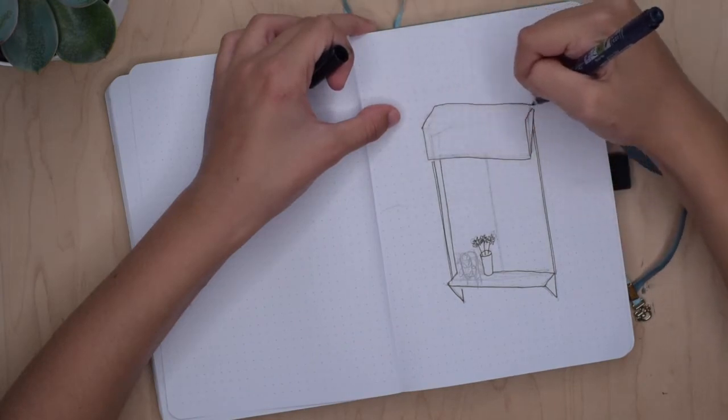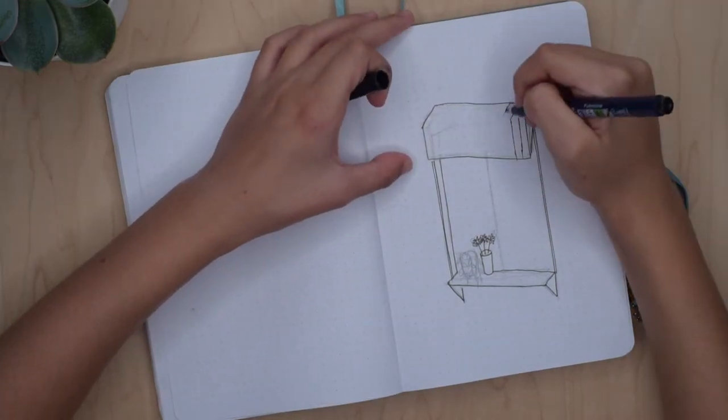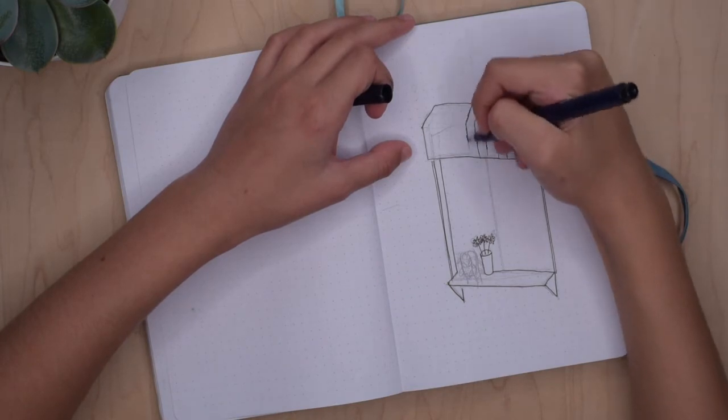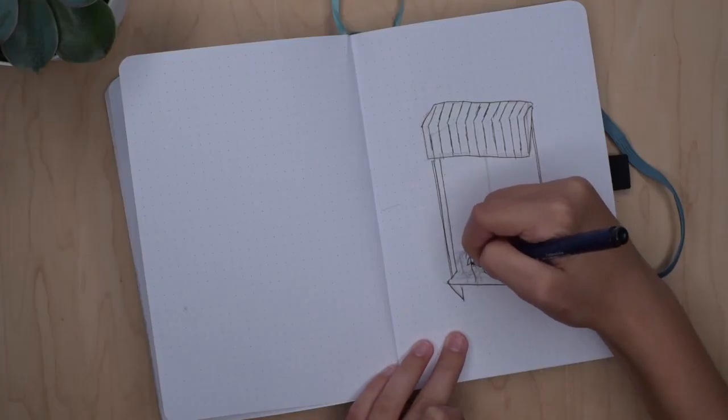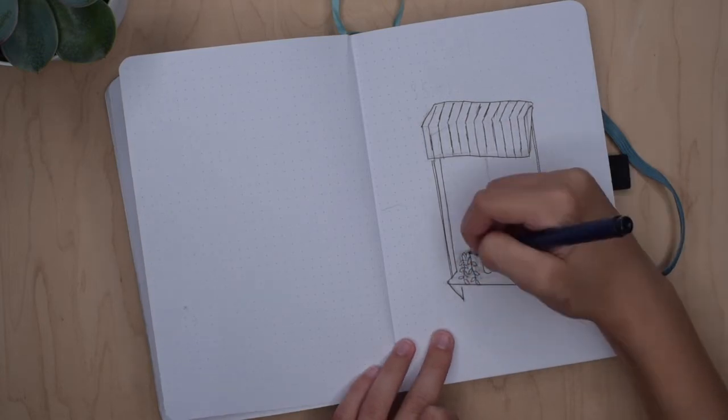I thought this would be the perfect way to incorporate it. I'm basically sketching out the window with a Tombow Fudenosuke. I just like how the texture turned out with this marker because I think it gives it a cool vibe.